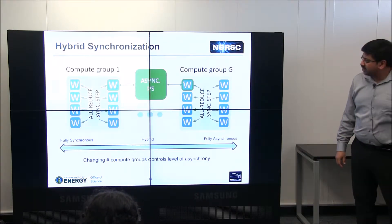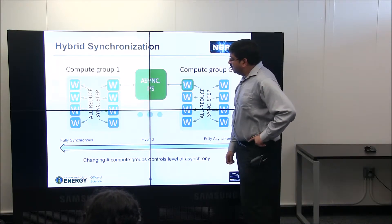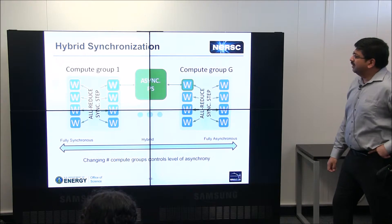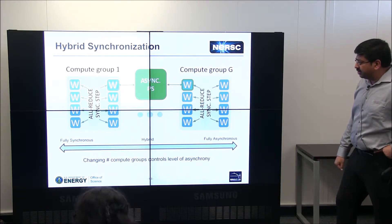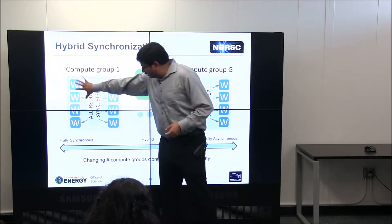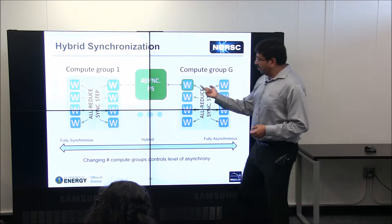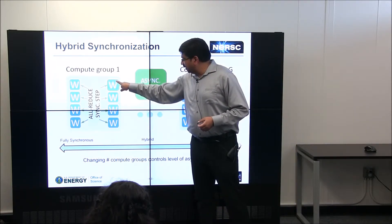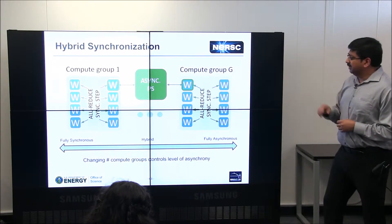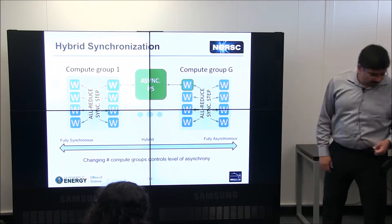The key observation is that you don't have to choose one extreme or the other — it doesn't have to be fully synchronous or fully asynchronous. You can use a hybrid strategy, which is what we ended up using. Essentially, you have tied synchronous groups updating weights, and occasionally one node in a synchronous group sends its update to an asynchronous parameter server, which then broadcasts updates to the rest of the compute groups.